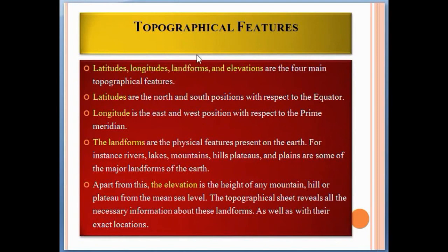Topographical features. Latitudes, longitudes, landforms and elevation are the four main topographic features. Latitudes are the north and south position with respect to the equator, and longitude is the east and west position with respect to the prime meridian. The landforms are the physical features present on the earth — for example, rivers, lakes, mountains, hills, plateaus and plains are some major landforms on the earth.